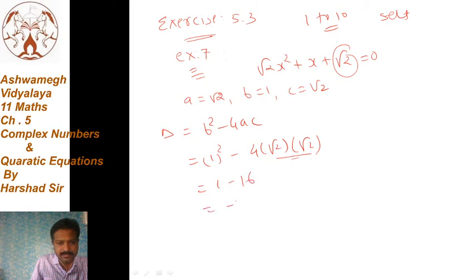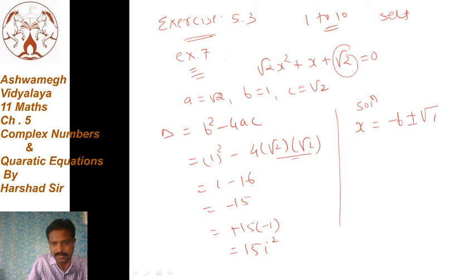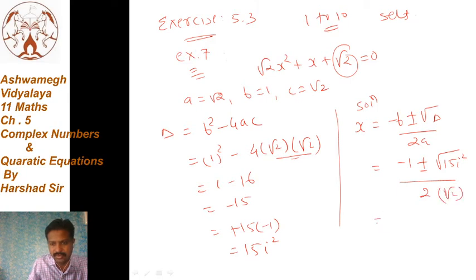Discriminant आएगा -15. Minus 15 के बदले, minus 1 के बदले हम i² लेंगे, so 15i². Its solution: x = (-b ± √delta) / 2a = (-1 ± √(15i²)) / (2√2) = (-1 ± i√15) / (2√2). So final result is: x = (-1 ± i√15) / (2√2). हम i√15 भी लिख सकते हैं या √15 · i भी।